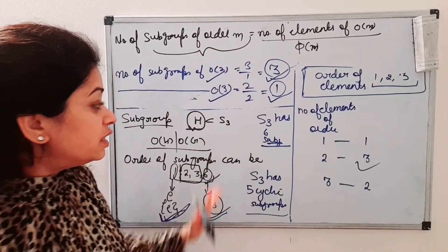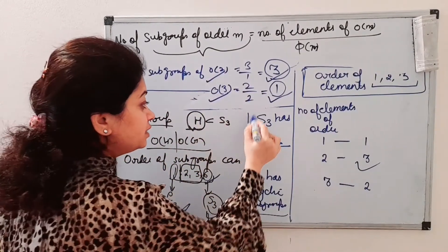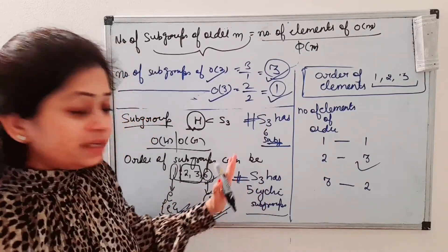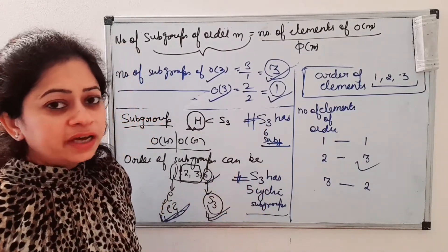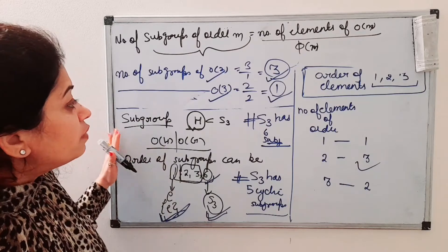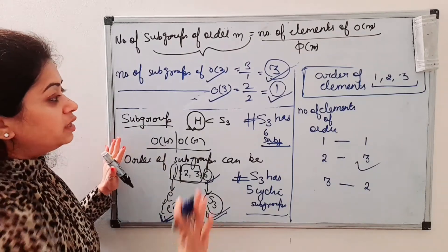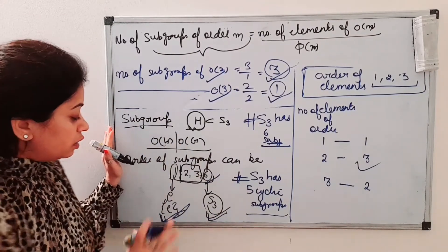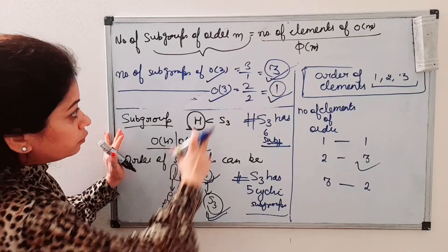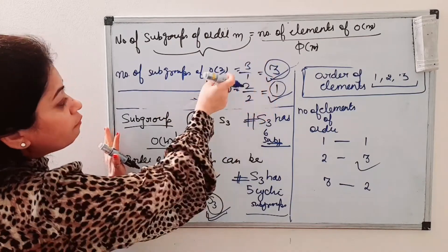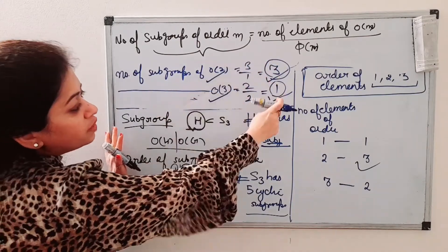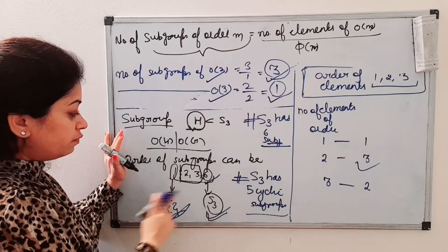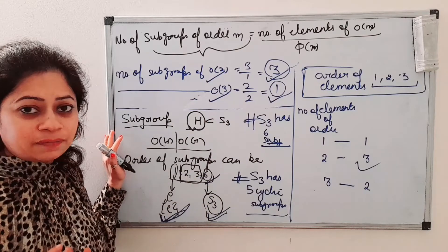Please make notes on these short tricks because you may need them while solving MCQs. So now we know that S3 has six subgroups: three subgroups of order two, one subgroup of order three, one subgroup of order one, and one subgroup of order six.